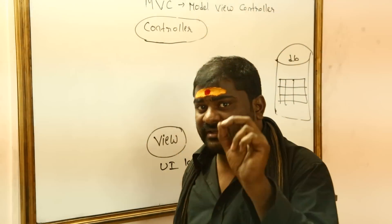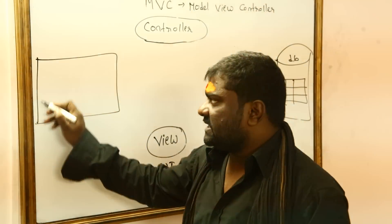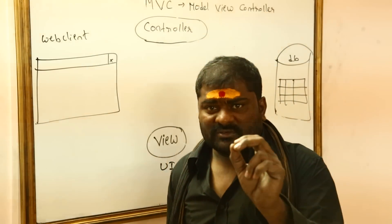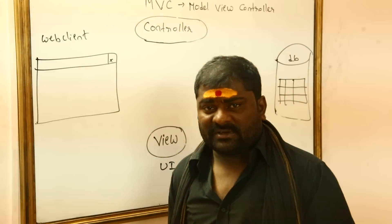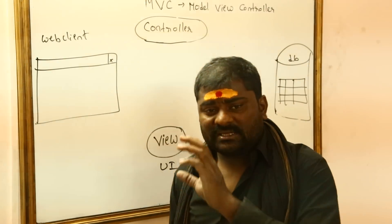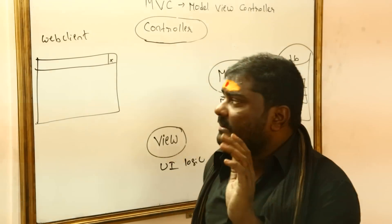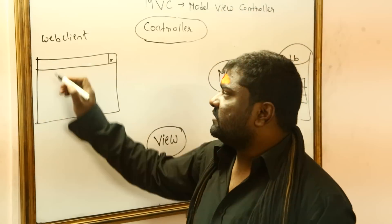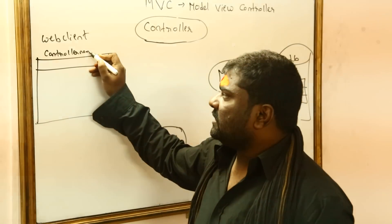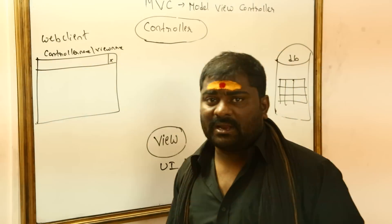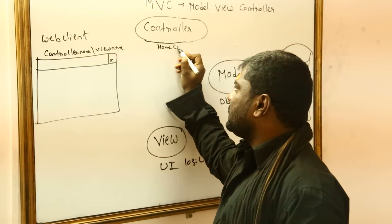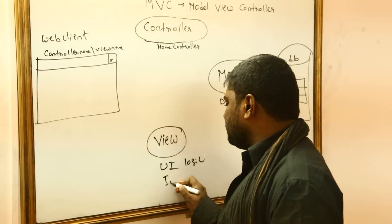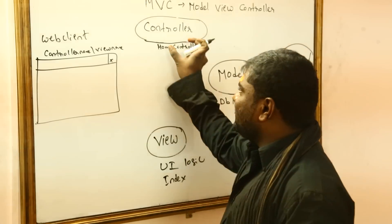Whenever you are working with any web application, you can consider a browser — the browser is called the web client. The user will type the request in the browser, then the browser will send that request to the server. In MVC, when a user gives a request, they have to give the controller name slash view name. For example, the controller is HomeController and the view is Index. The view will become a method under the controller class.